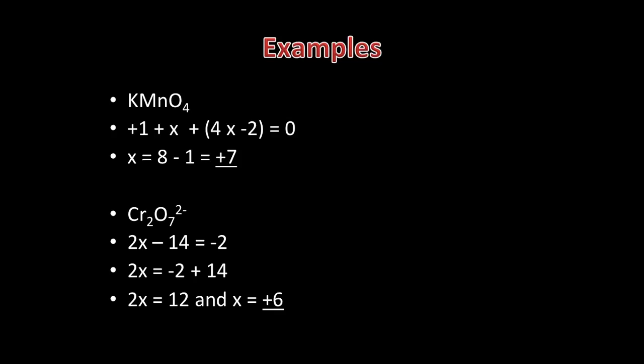A further example is chromium in the dichromate ion, Cr2O7 2-. Oxygen has an oxidation state of minus 2 and there are 7 of them, so that's equal to minus 14. The overall charge on the ion is 2 minus and there are 2 chromiums. Therefore, the oxidation state of each chromium must be plus 6.